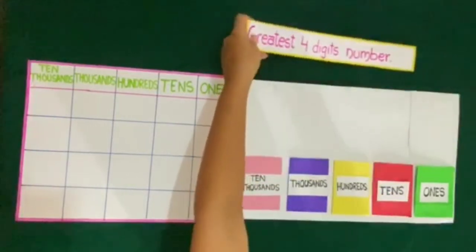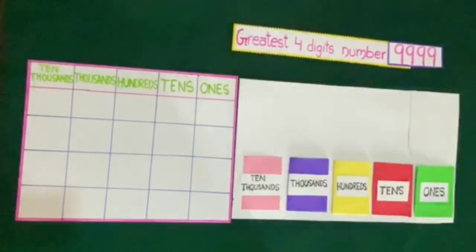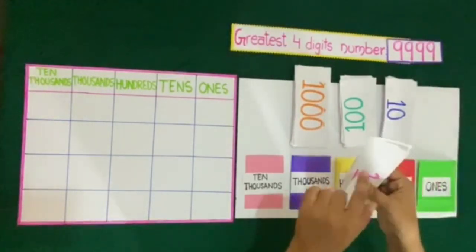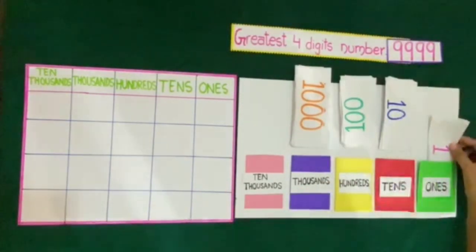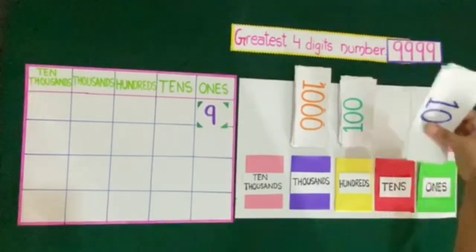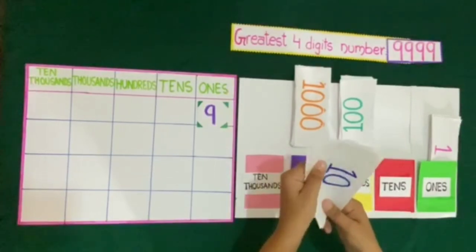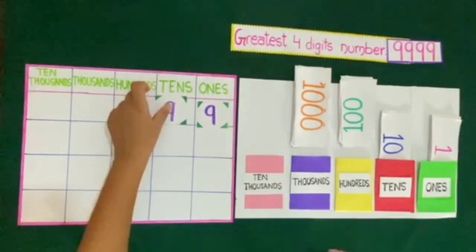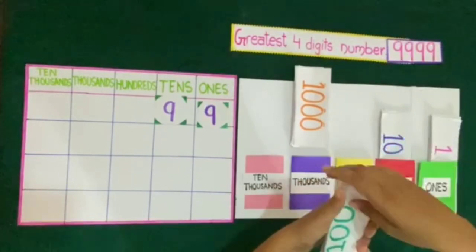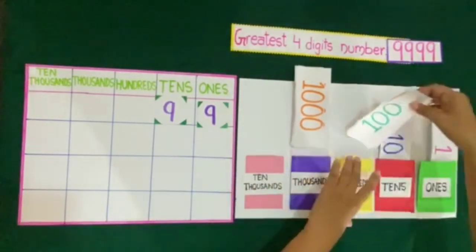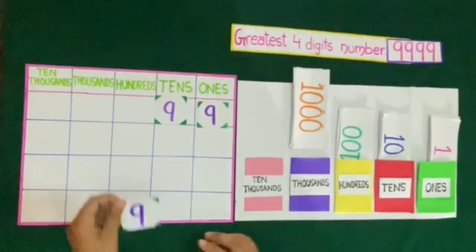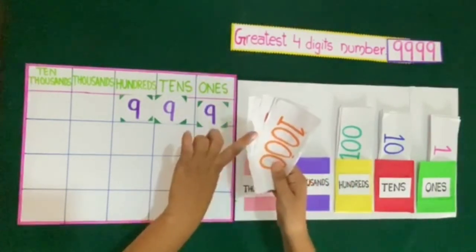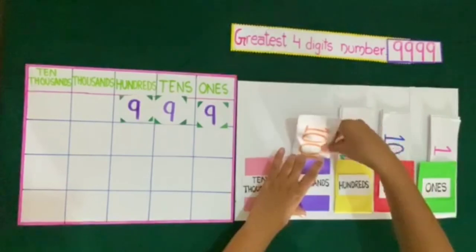The greatest 4-digit number is 9999. We will count currency notes. Here we have 9 notes of 1 rupee, which means 9 at the 1's place. Next, we count 10-rupee notes — here we have 90 rupees, which means 9 at the 10's place. Next, 100-rupee notes — here we have 900 rupees, which means 9 at the 100's place. Next, 1000-rupee notes — here we have 9000 rupees, which means 9 at the 1000's place.